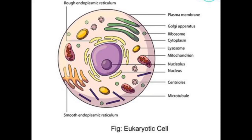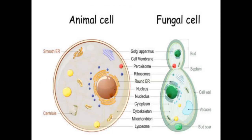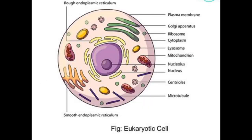Eukaryotic cells are membrane-bound cell organelles. Plant cells, animal cells, and fungal cells are eukaryotic cells. Many organelles are found in eukaryotic cells.